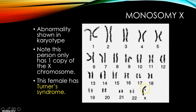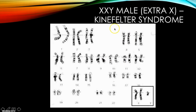Another condition: monosomy X, or a single X, is known as Turner syndrome — the absence of another X or another Y. It is female because the X determines that, but they're missing some genetic information. XXY is known as Klinefelter syndrome — in this case there are two X's and a Y. This would be expressed as a male, but there are obviously issues there as well.